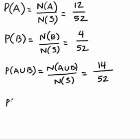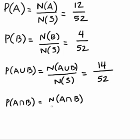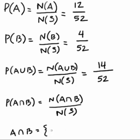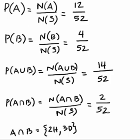The probability of A intersect B is, by the classical approach, the number of elements in A intersect B divided by the number of elements in the sample space. A intersect B consists of the elements common to both A and B. The only two cards in common are the 2 of hearts and the 3 of diamonds. So the number of elements in A intersect B is 2, and the probability of A intersect B is 2 divided by 52.